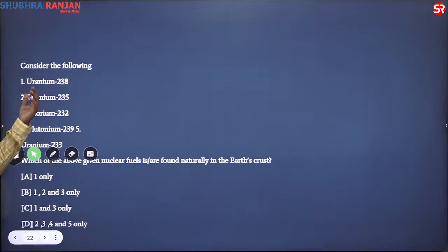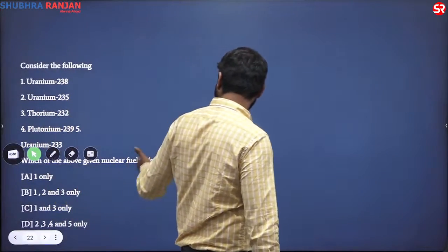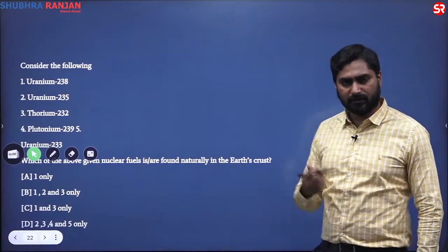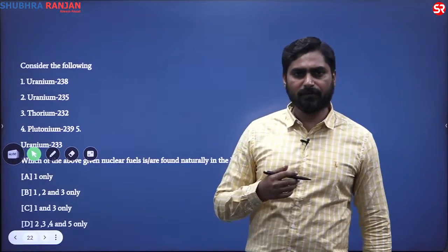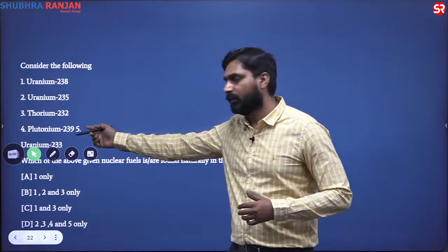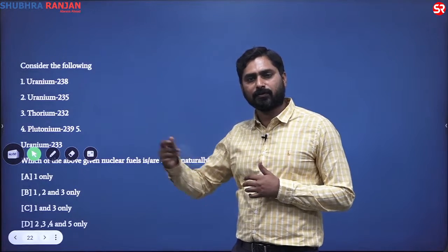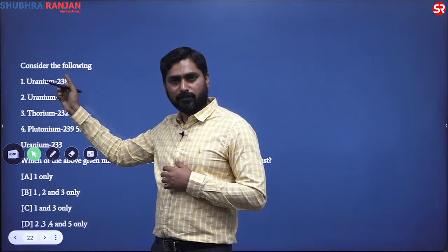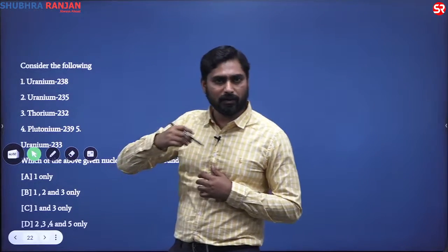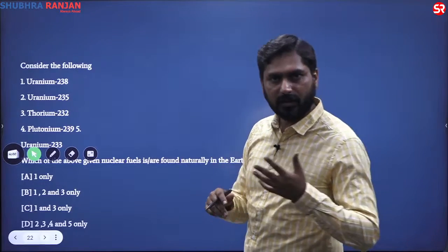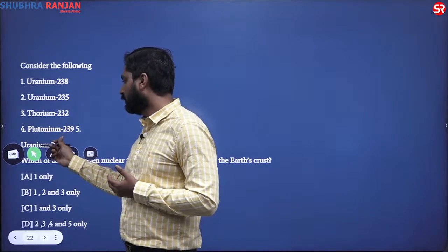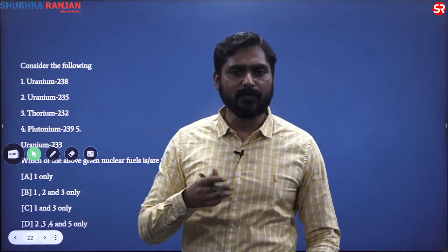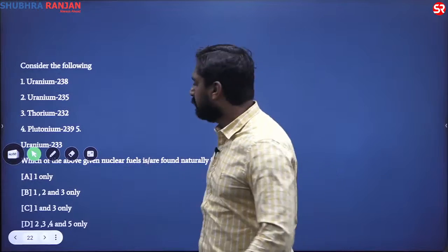This is a simpler question: which of the following — uranium-238, uranium-235, thorium-232, plutonium-239, and uranium-233 — are found naturally in the earth's crust? Plutonium is produced in nuclear reactors: when neutrons hit uranium-238, they are absorbed and uranium-238 becomes plutonium. So plutonium is not naturally found. Uranium-233 is also not naturally found — in India's three-stage nuclear program, thorium-232 is converted into uranium-233.